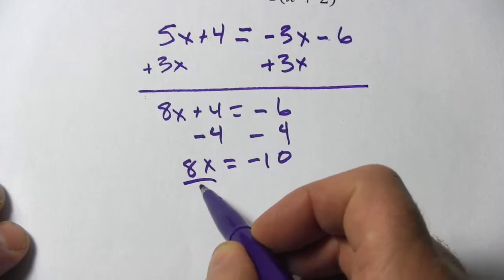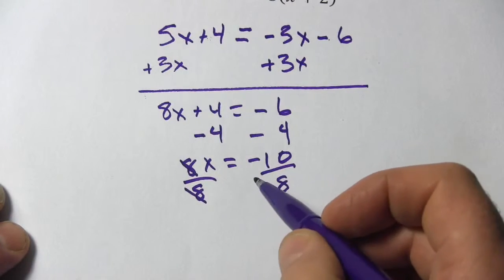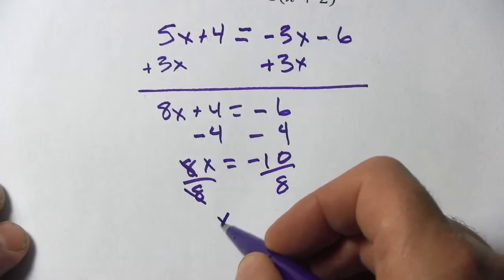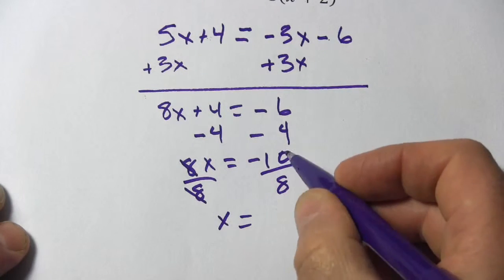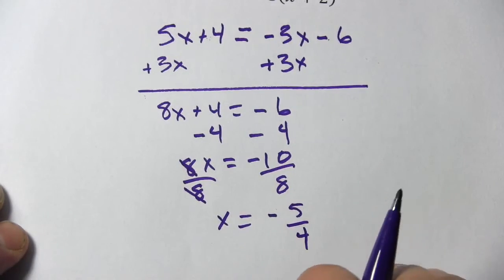And then my last step I'll divide both sides by 8. That gets x alone and we get x equals negative 10 eighths. I can divide both of those top and bottom by 2 so I get x equals negative 5 fourths.